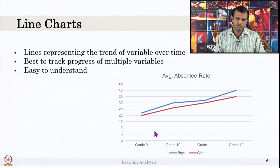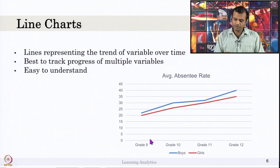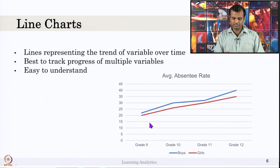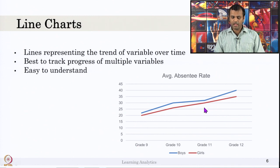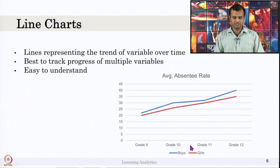Line chart is not always over time — it can be used to check percentage variance over different grades. We saw a similar chart in the stacked bar chart and bar chart example. The same values can be plotted as a line chart. In this chart, it is easy to understand that the girls' average absentee rate is always below the boys' average absentee rate, and the boys' average absentee rate is increasing for every grade — both girls and boys.